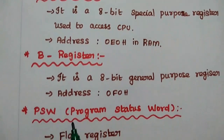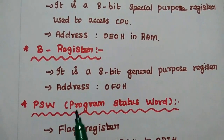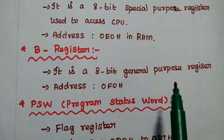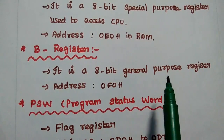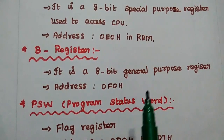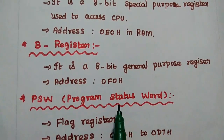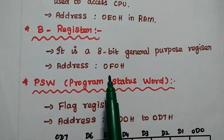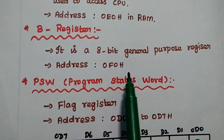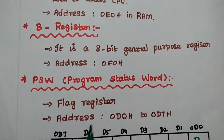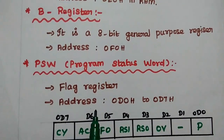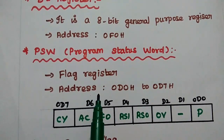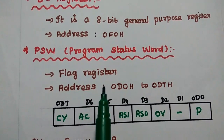The next one is the B register. It is an 8-bit general purpose register used in the CPU. Its memory location is 0F0H. The next one is PSW, that is the program status word register.